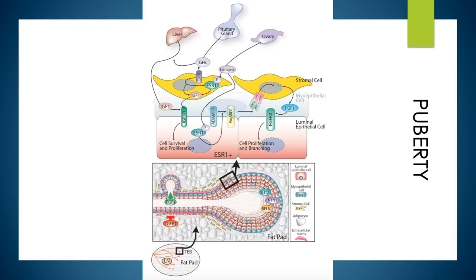Putting it all together: during pubertal development, the terminal end buds grow through the mammary fat pad fueled by cell proliferation. Growth hormone regulates cell proliferation by inducing expression of IGF-1 in both the liver and mammary stroma. IGF-1 acts together with estrogen secreted from the ovary to induce epithelial cell proliferation. Estrogen signaling through ESR-1 acts in a paracrine fashion to stimulate release of AREG, which binds its receptor on stromal cells and induces expression of FGFs. FGFs in turn stimulate luminal cell proliferation. Other factors such as TGF-beta-1, RELIN, SLIT-2, and Netrin-1 contribute to mammary architecture by either positively or negatively regulating cell proliferation or maintaining cell-to-cell interactions.